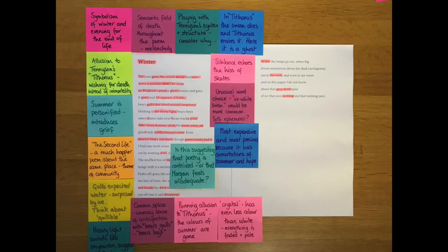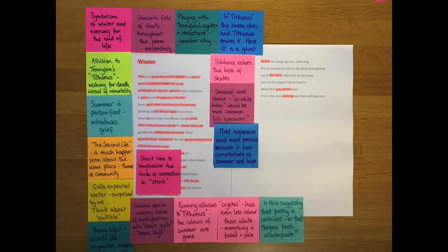Poets would find it and then get the repetition of find in I find one stark scene. He doesn't find the blue. And then this I find one stark scene is just a short line set on its own which emphasizes that lack of connectedness in stark. He finds it bare and devoid of warmth somehow.